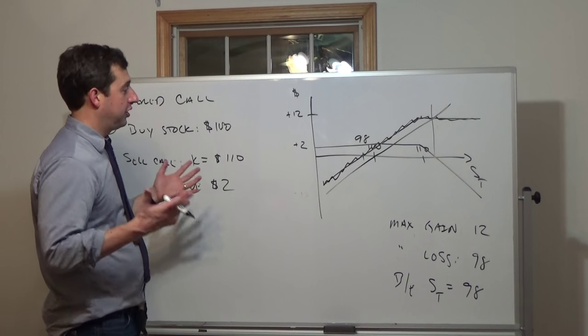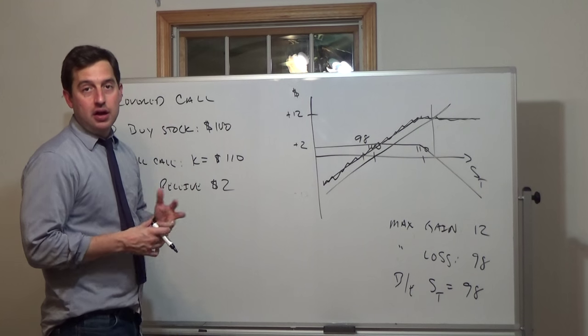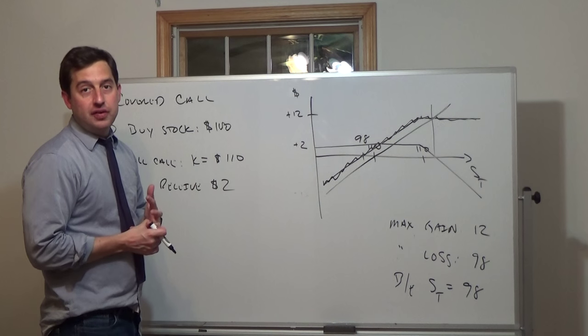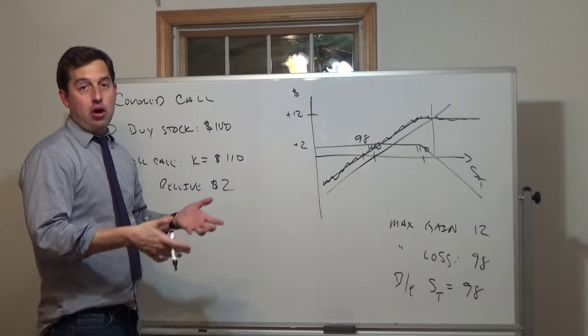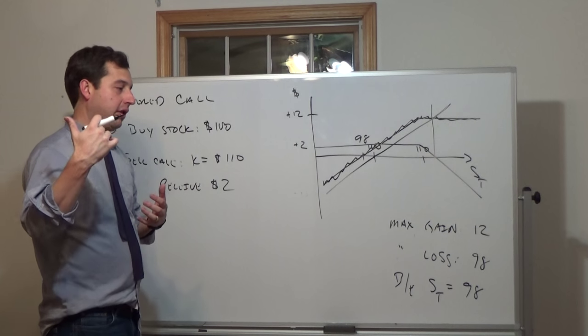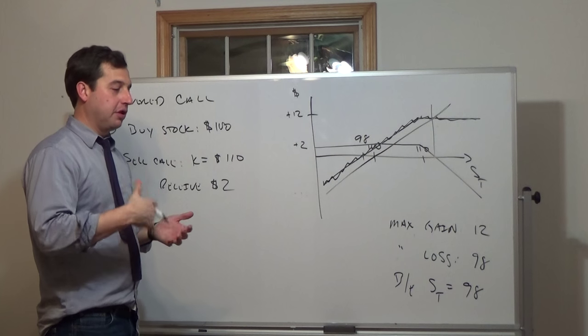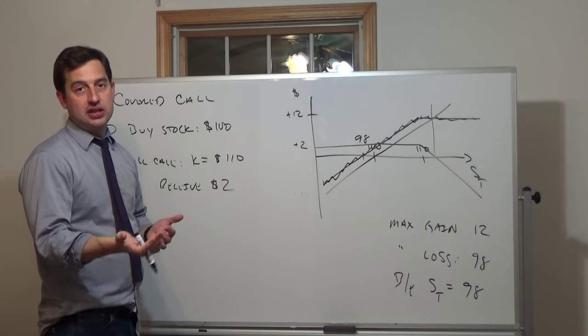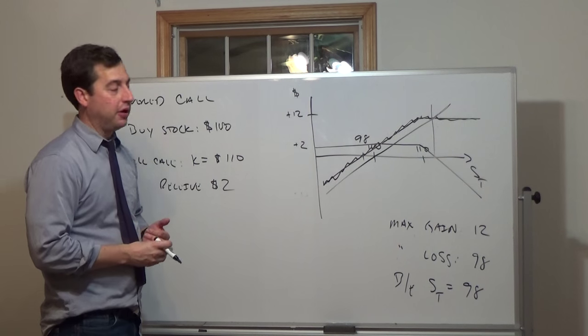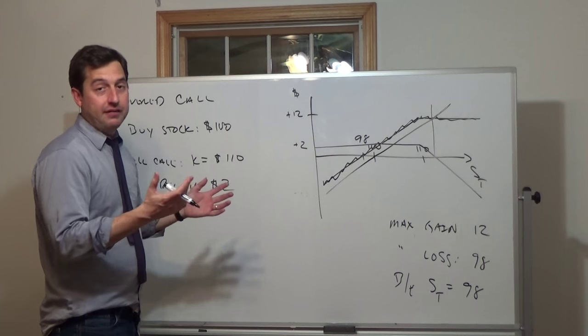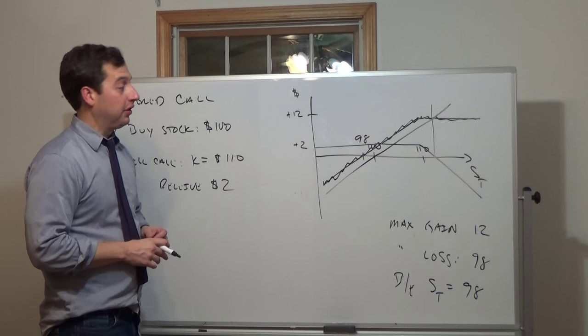The next thing is to put these two together into a collar. A collar is going to be buying the stock, selling the call, and buying the put. I'll leave that for another lecture.